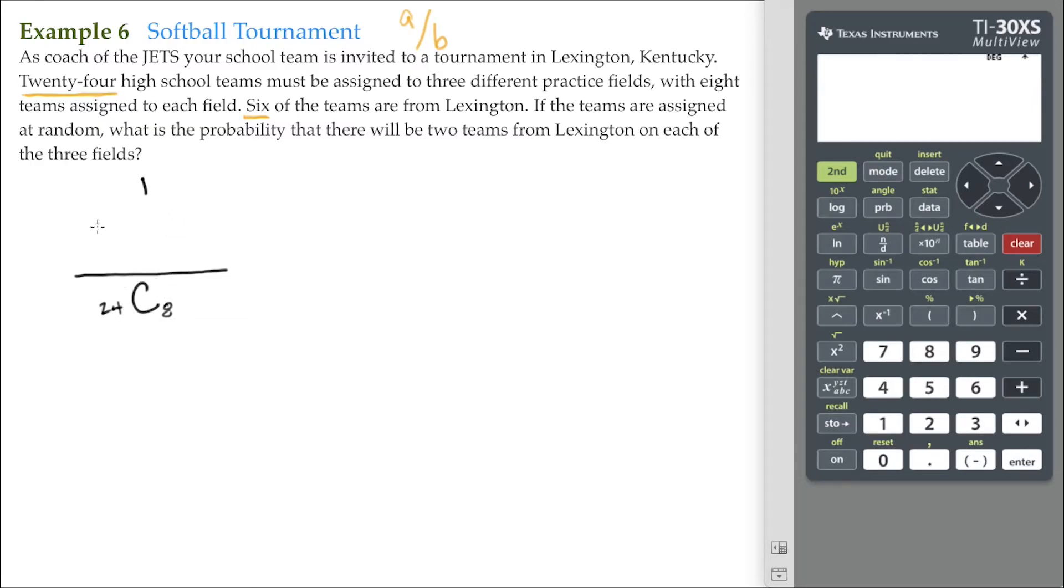Our event now is that two of the six teams from Lexington have to be assigned to this field. So, that's six choose two, and then you got all the other teams. So, that gives us 18 choose six.